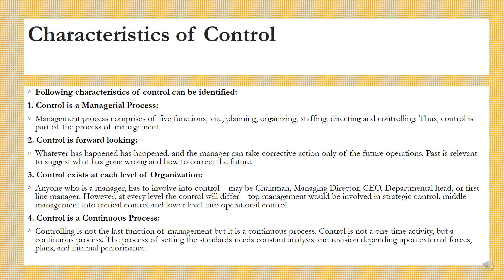Control is forward-looking. Whatever has happened has happened and the manager can take corrective action only of the future operations. Past is relevant to suggest what has gone wrong and how to correct the future. So, always you would be controlling the future — past has passed, you cannot control it. What remains in future can be controlled and hence it is forward-looking.